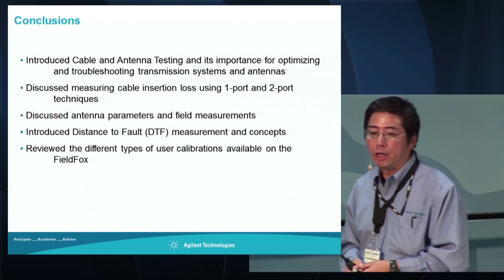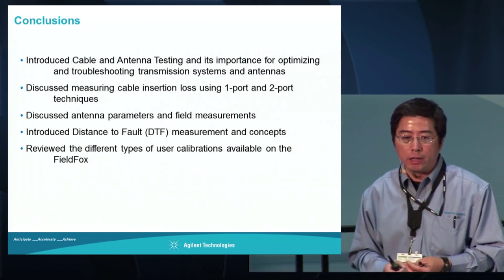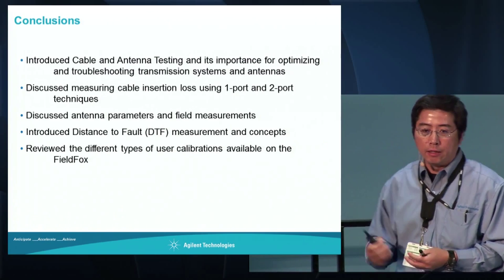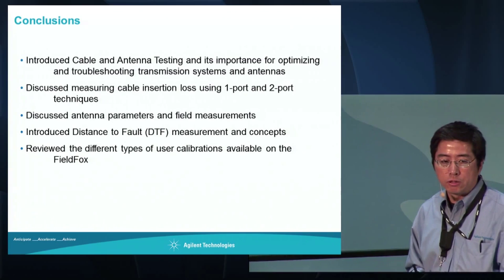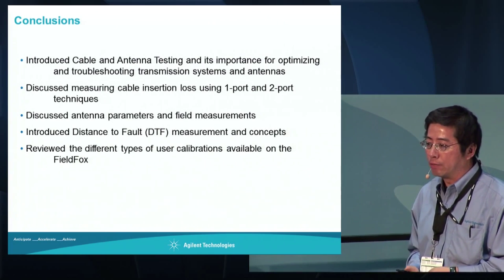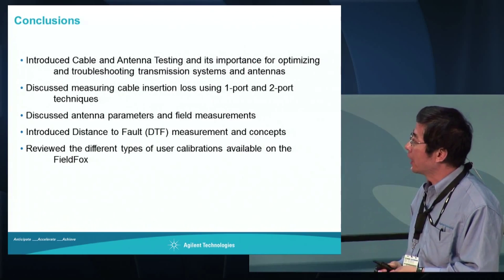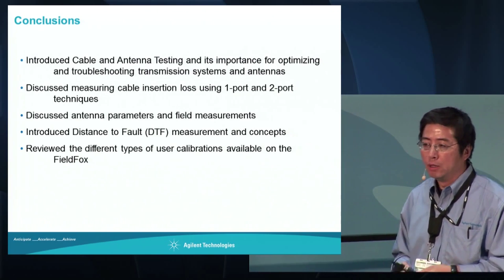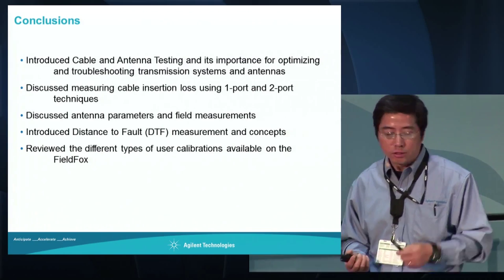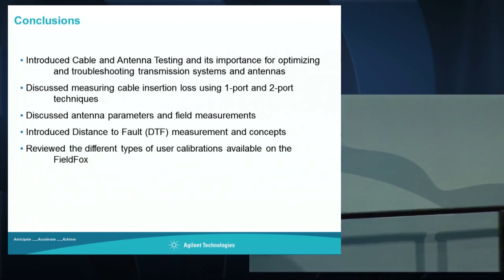In summary, cable and antenna measurement is critical for any kind of communication system. Using the right method to make a return loss as well as distance to fault measurement is critical. Agilent has a unique contribution in calibration to make sure the measurements are repeatable and consistent with our lab results. I've run out of time - feel free to ask questions. Since I'm the last one, I can stay here.